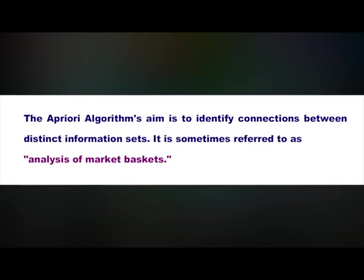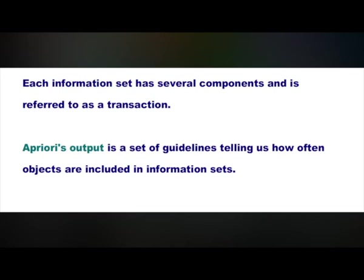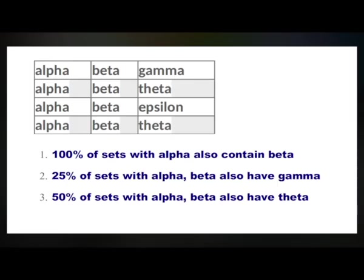The Apriori algorithm aims to identify the connections between distinct data sets. It is sometimes referred to as analysis of market baskets. Each data set has several components and is referred to as a transaction. Apriori's output is a set of guidelines telling us how often objects are included in data sets. Here is an example. Each line is a set of items. This table shows 4 items with 3 elements. Each item has alpha, beta, gamma.